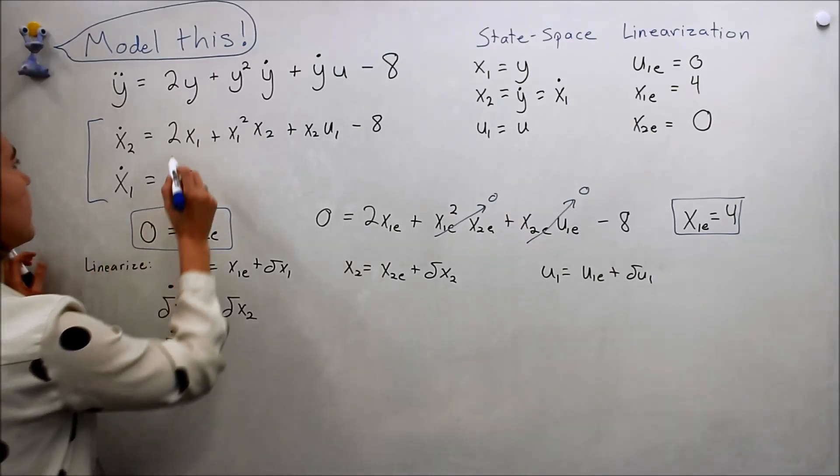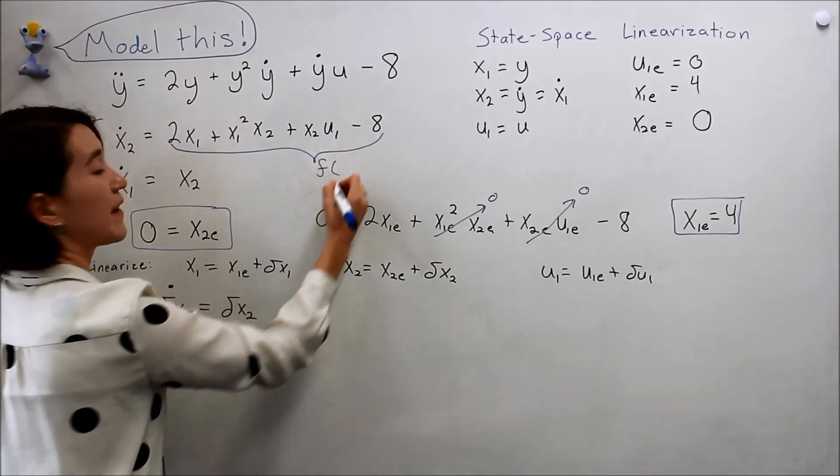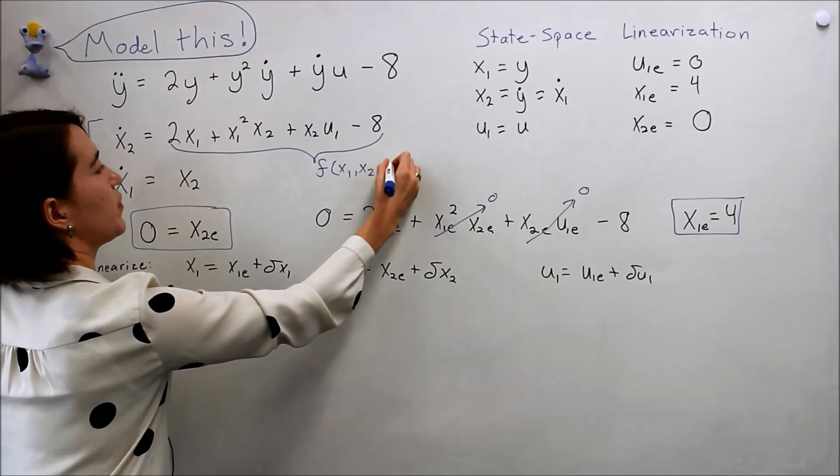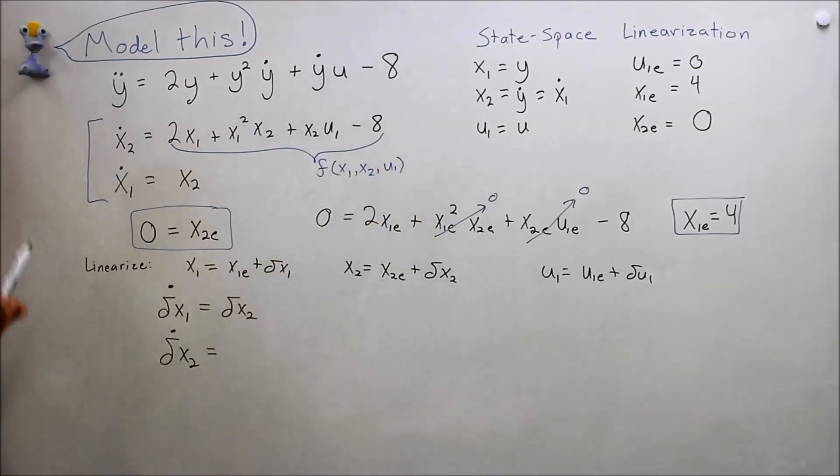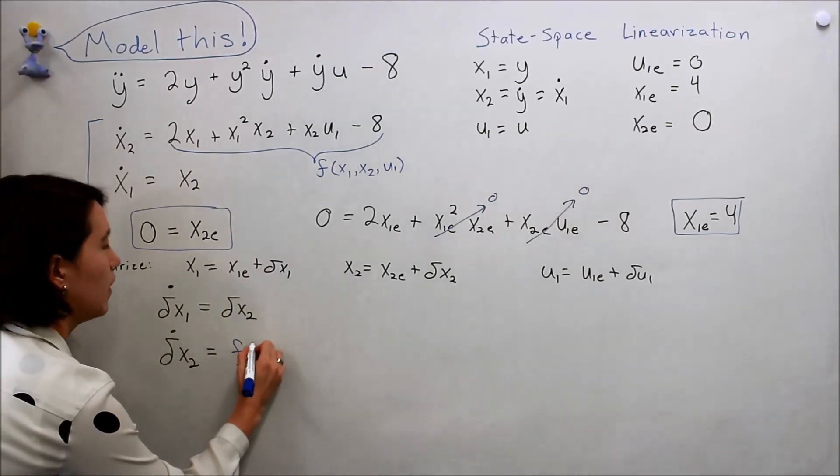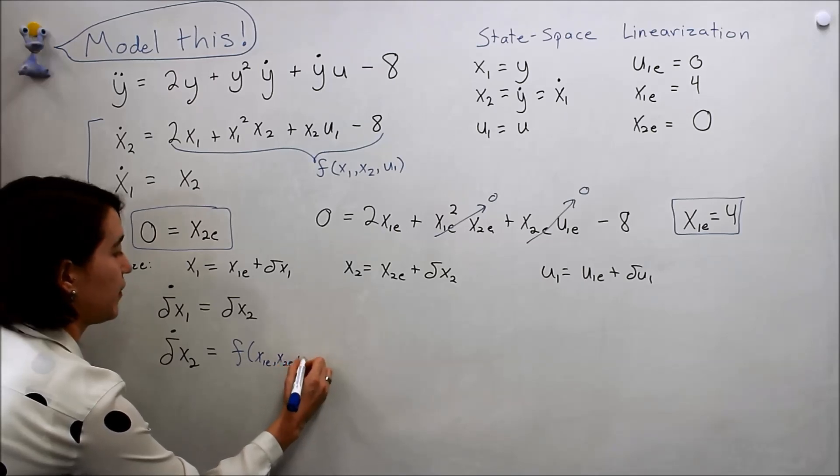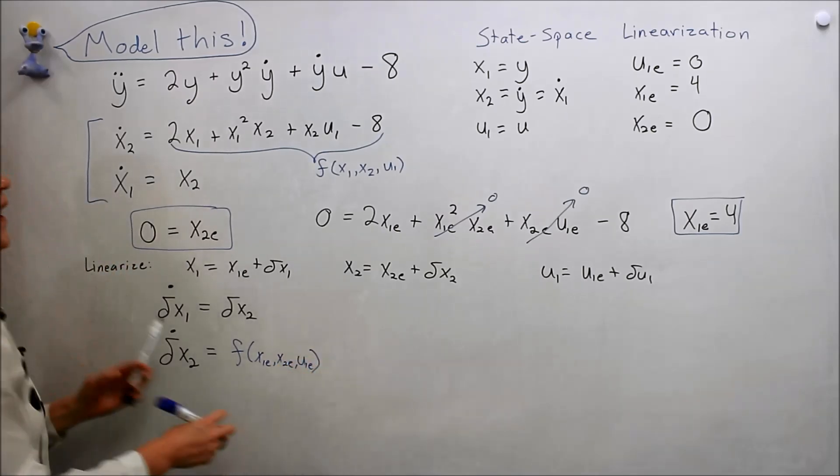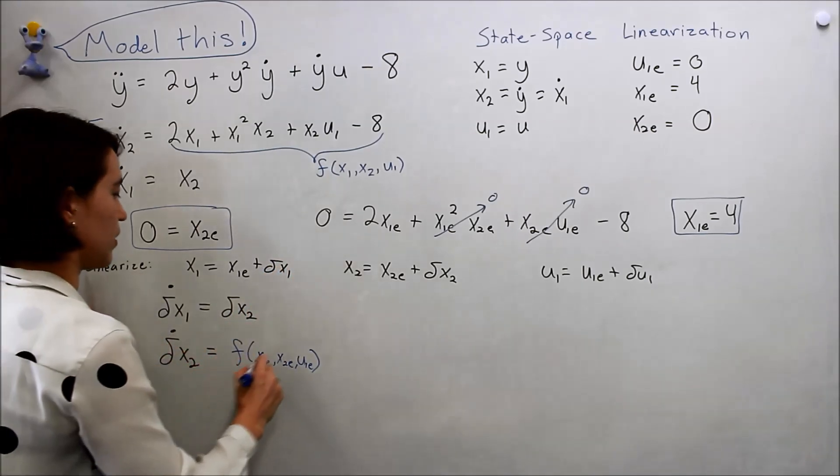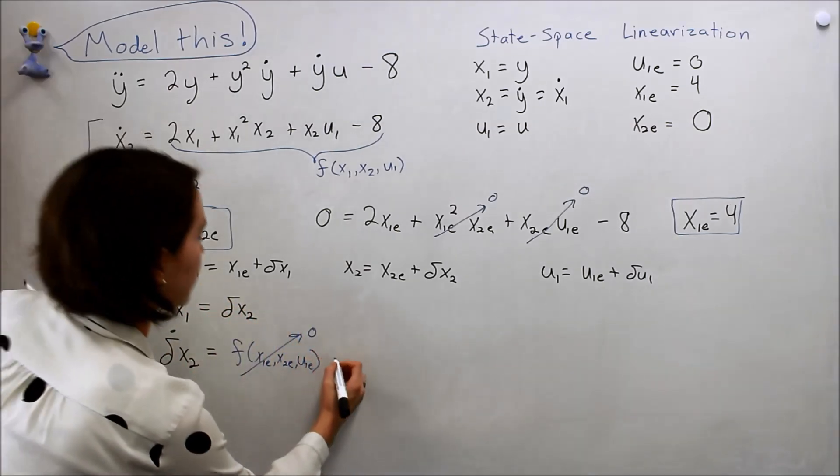Let's name this whole thing f, and it's a function of x1, x2, and u1. Let's do the Taylor series expansion. So we would do f of x1e, x2e, and u1e. Remember, this is at the equilibrium point, so we know that this will always go to zero. So now we have to do partial derivatives.